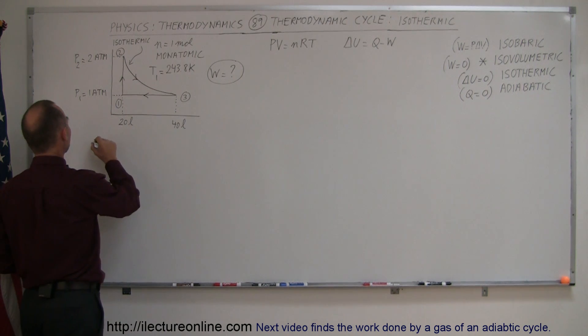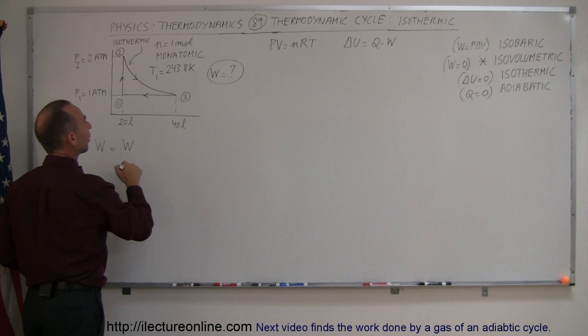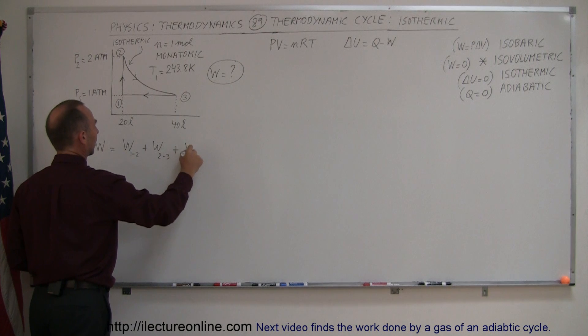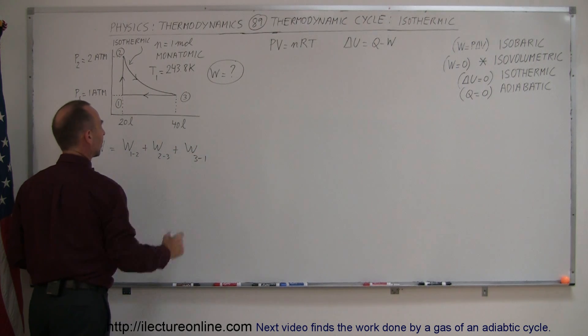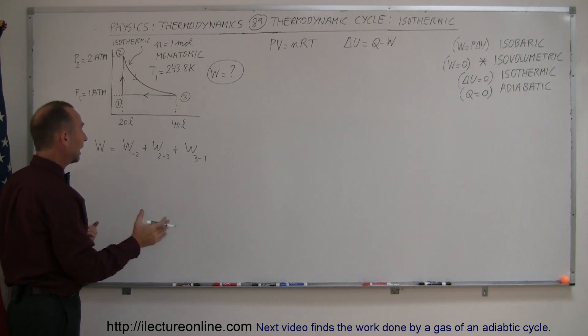What we're going to do instead is simply say that the work done in the entire cycle is equal to the sum of the work done in the first process, which is from one to two, plus the work done in the second process from two to three, plus the work done in the third process from three back to the original state one. So we're simply going to calculate the work done in each and add them up.